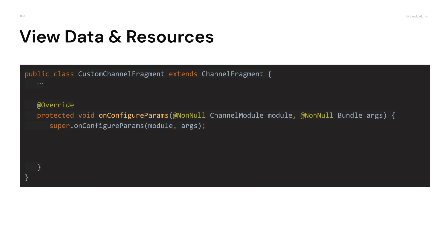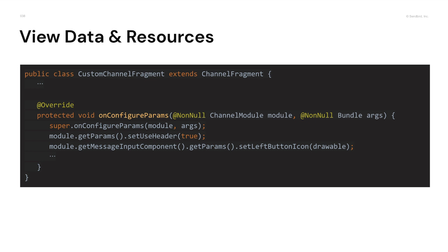The following is how to set data in the view and change resources using the params class of the module and components. Inherit your custom channel fragment class and overwrite the onConfigureParams method. The module created in onCreateModule is passed as a parameter. You can set the params of the module and the params of components here. The value set in params is applied only when it is set before the onCreateView code.